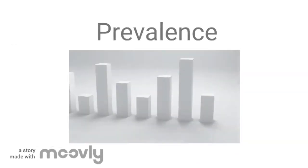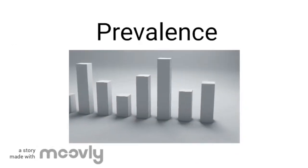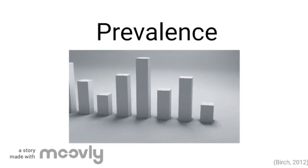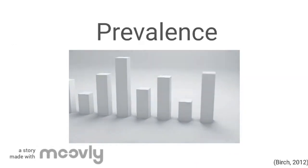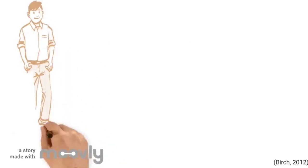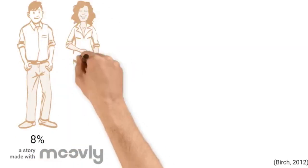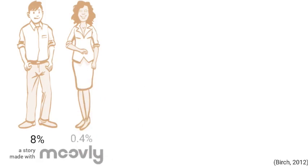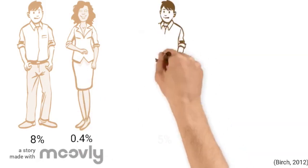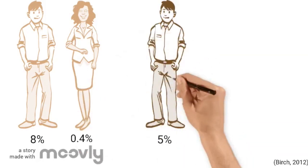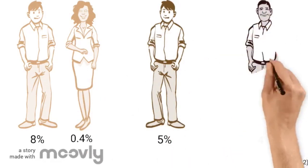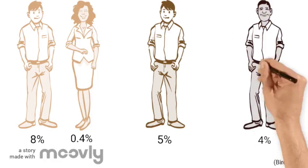According to Birch in 2012, the overall prevalence of red-green colorblindness is approximately 8% in men and 0.4% in women that are European Caucasians, 5% in male Asians, and 4% in male Africans.